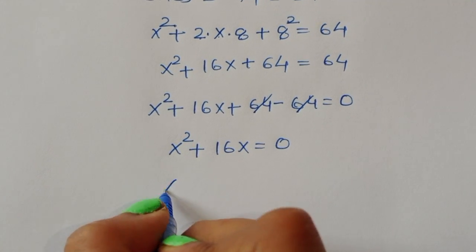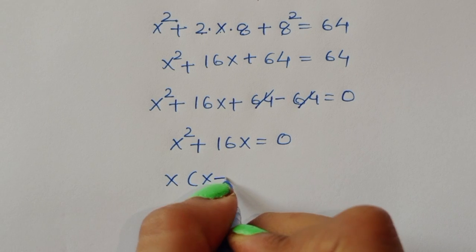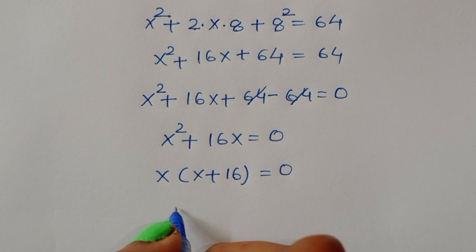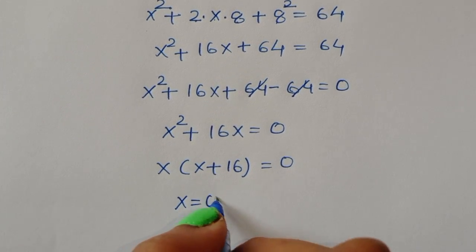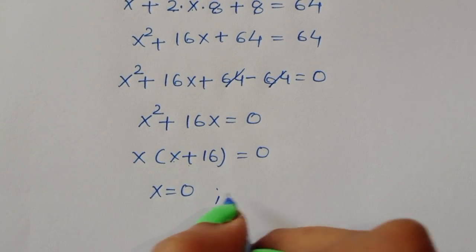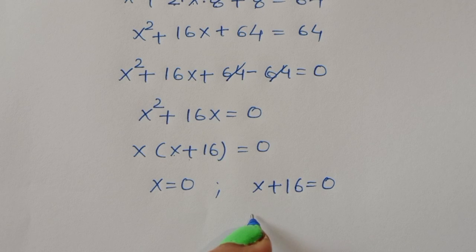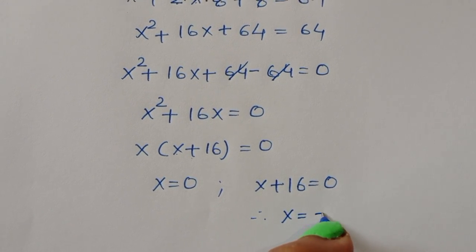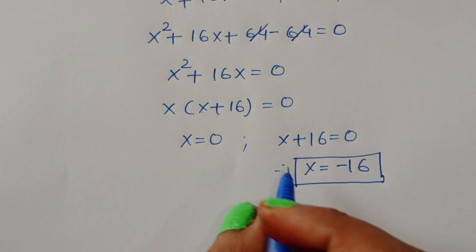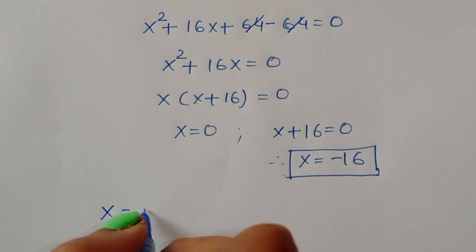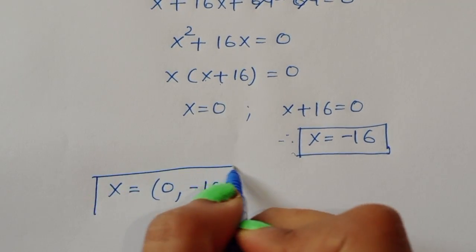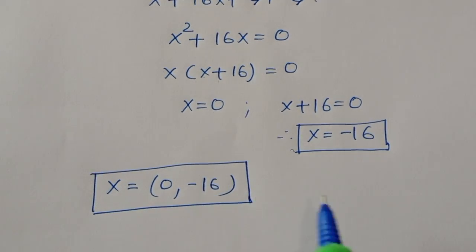Now we can take x as common, so x times (x + 16) is equal to 0. We have two terms: the first one is x equal to 0, and the next one is x plus 16 equal to 0, therefore x is equal to minus 16. So we got two values of x: x is equal to 0 and x is equal to minus 16.